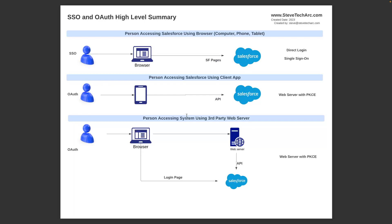Now we're going to go over some alternative scenarios. In the first scenario, the human is using a browser — whether on a computer, phone, or tablet, it's still browser technology. In the second scenario, we're talking about a human using a mobile app, which is then going to be accessing Salesforce through the API — not rendering the native Salesforce pages, but accessing the data through the API interface. In this case we switch to a different mechanism called OAuth.